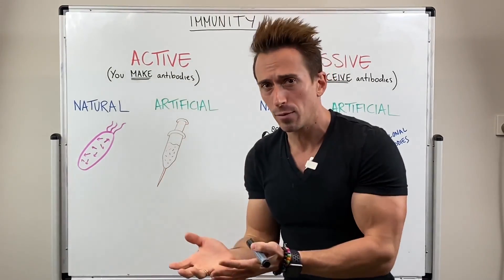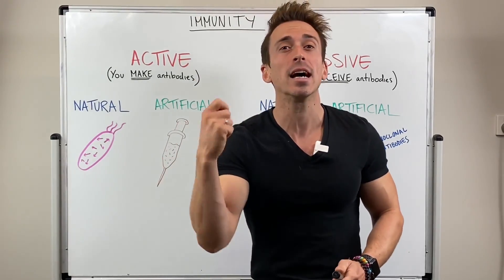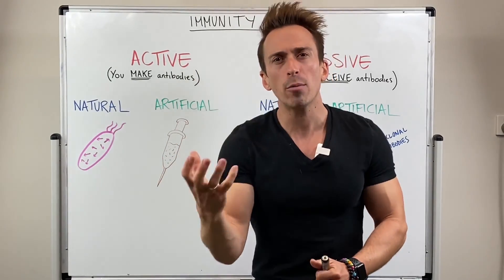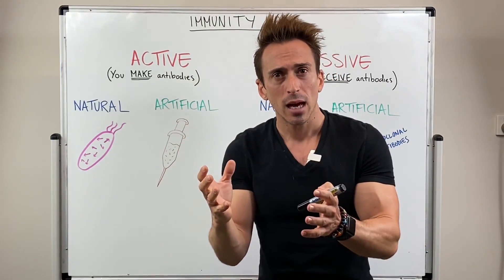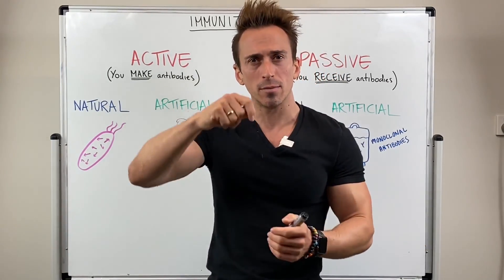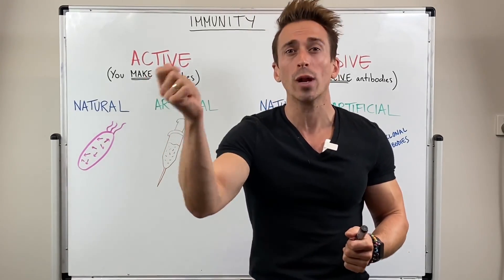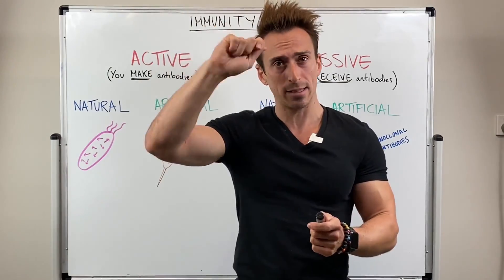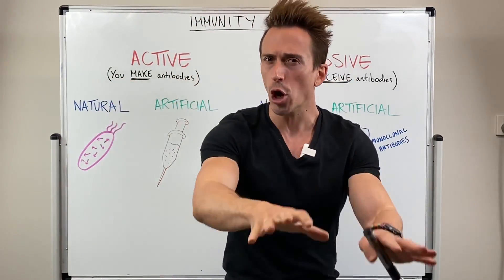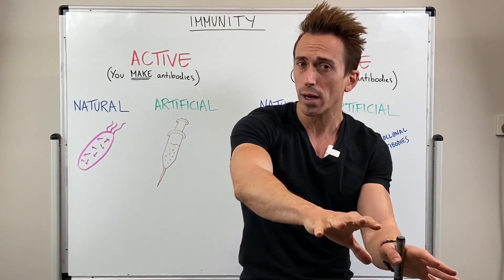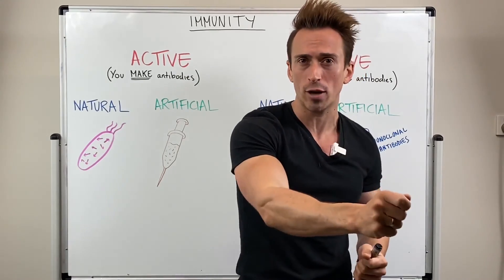The adaptive immune system is specific, targeted, and it does develop a memory. This memory we're talking about consists of antibodies — parts of the immune system that we create, targeted to specific parts of a molecule called antigens. Antigens are flags — they're proteins that molecules have on their surface indicating whether they belong to us or don't belong to us. If they don't belong to us, antibodies will target them for agglutination and destruction.